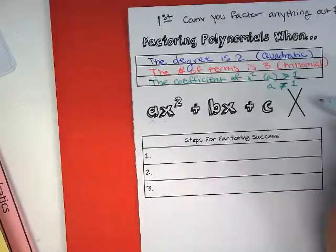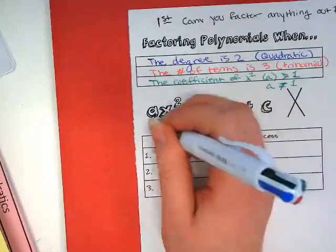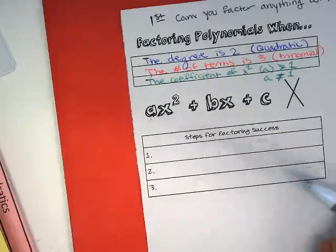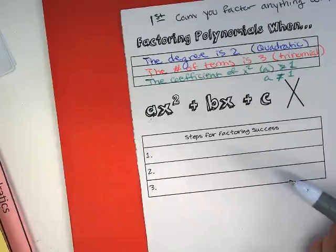But in this scenario, we're going to look to see what happens if we can't factor anything out. And we are still left with ax squared plus bx plus c.